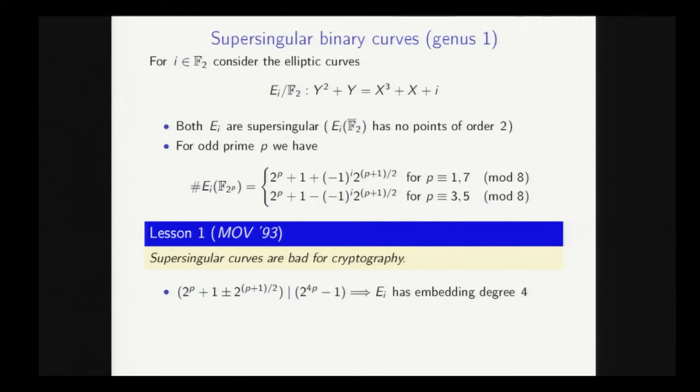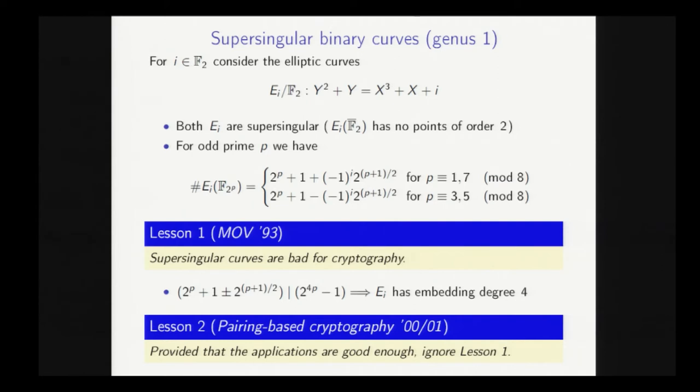And it was reasoned that, well, you may have an attack in the embedding field of a curve, but as long as the DLP in this field is still hard, then this is an acceptable state of affairs. And so the second lesson to take from the history of these curves is basically, provided the applications are good enough, we can safely ignore lesson one.